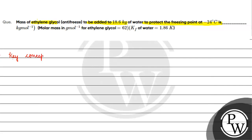Key concept for this question is depression in freezing point. The formula is: delta Tf equals to i into Kf into molality.